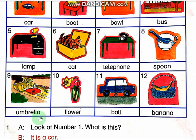Next, an umbrella. What is this? It is an umbrella. What color is it? It is red. It is a red umbrella. Where is the red umbrella? It is in the yellow river.